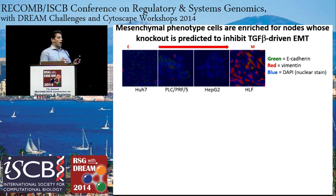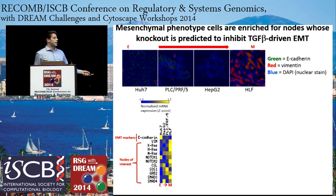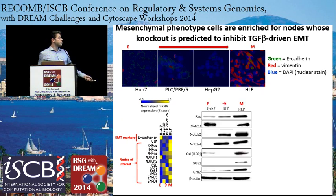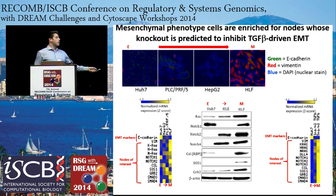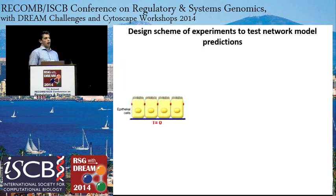Before getting to our siRNA knockdown screen, we did further characterization of our model. We looked at our nodes of interest and their expression in epithelial versus mesenchymal cells. By mRNA expression, we saw that most of the nodes we're interested in knocking down are in fact enriched in our mesenchymal phenotype cells relative to epithelial cells. We also saw this by protein expression. When we treated our most epithelial HU7 cells with TGF-beta, we get induction of the nodes we're interested in knocking down, which we thought was interesting.